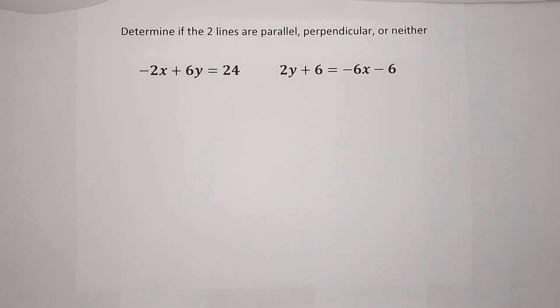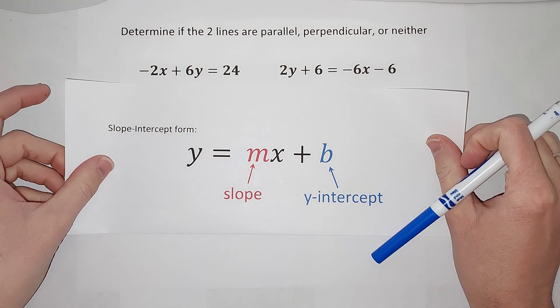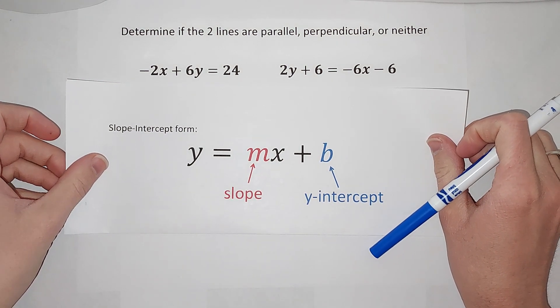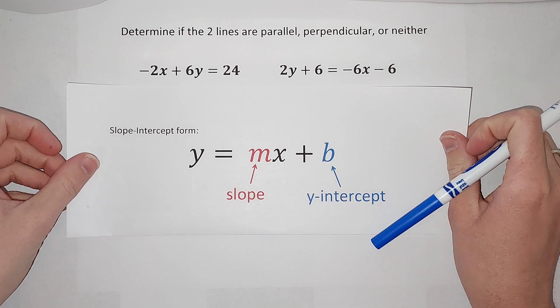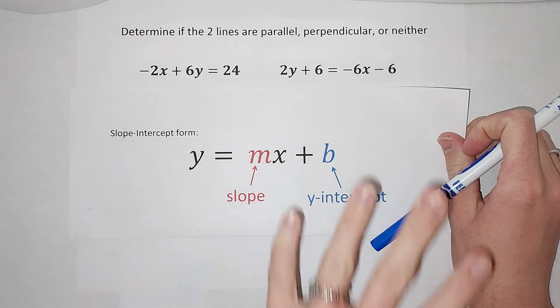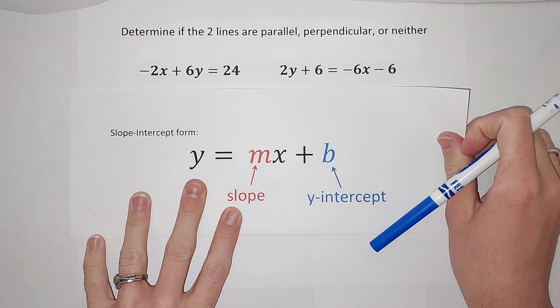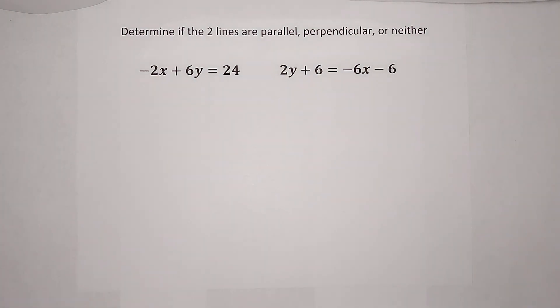In order to know if these are parallel, perpendicular, or neither, we need to know what their slope is. The slope is the whole key to this. In order to figure out their slope pretty easily, I want to be in slope intercept form. You're probably used to this: y equals mx plus b. So what I want to do for each of these equations is get y alone.